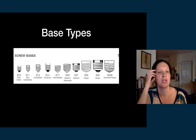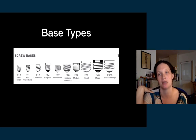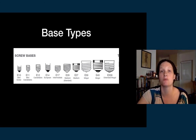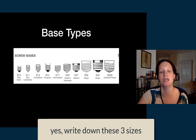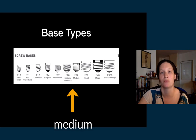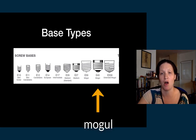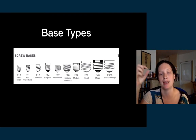Here are base types — we talked about this a little when we were taking the lights apart and putting them back together. Screw bases are the ones you find in your house. The sizes you should have awareness of are the medium E26 and E27 screw bases — those are the ones in your house. Mogul bases are bigger, more giant bases. Then there's candelabra and mini candelabra, E11 and E12.